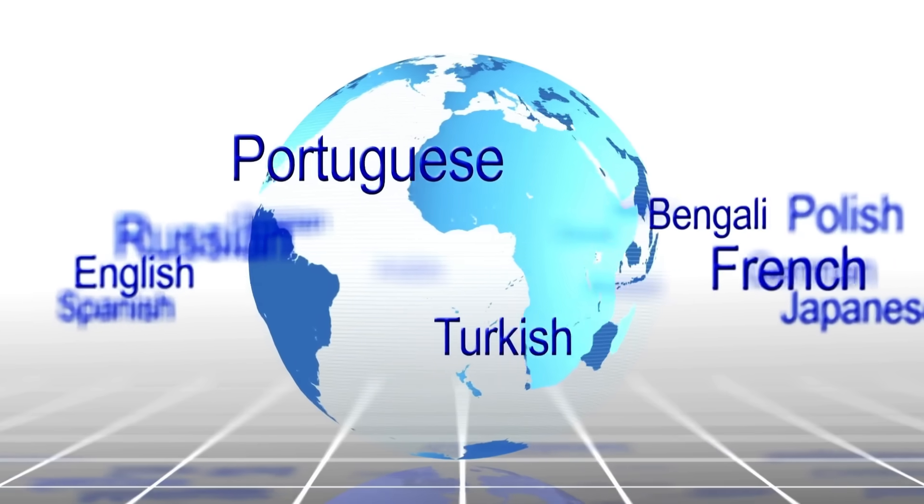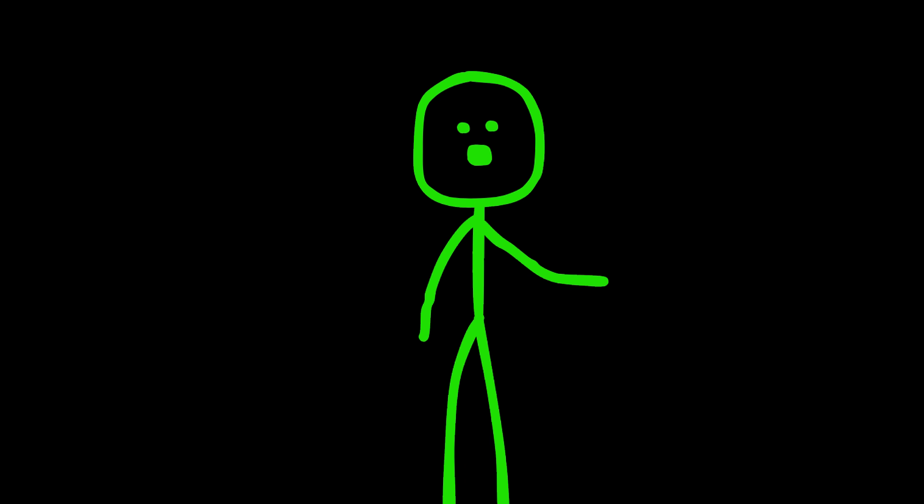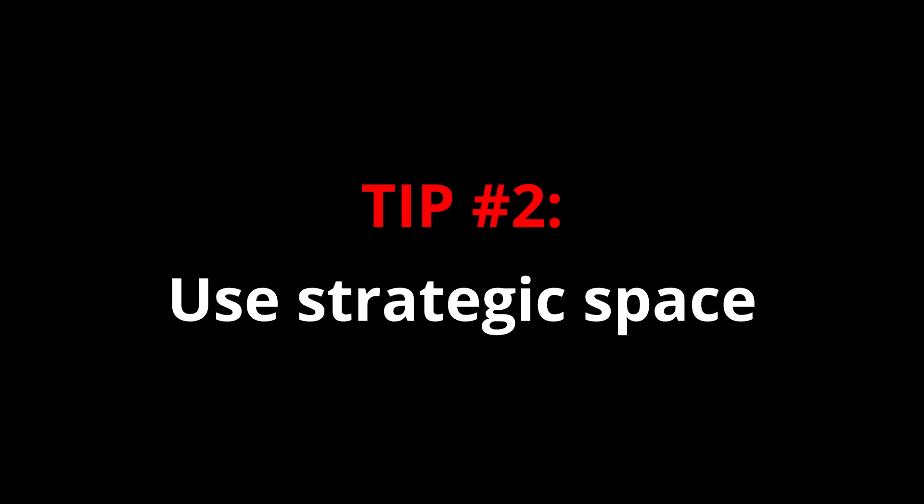But just like with a foreign language, there are formatting tricks that can make a huge difference. The first trick is to use a navigation system. Start each page with the date, the topic, and the exercise number. That way, even months later, you can easily find what you're looking for.